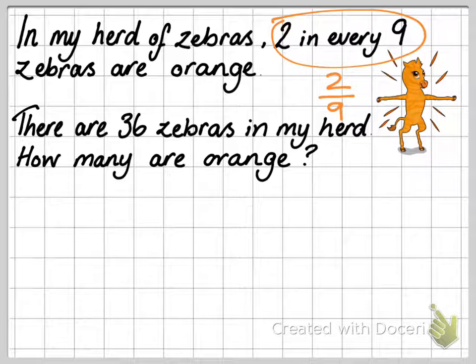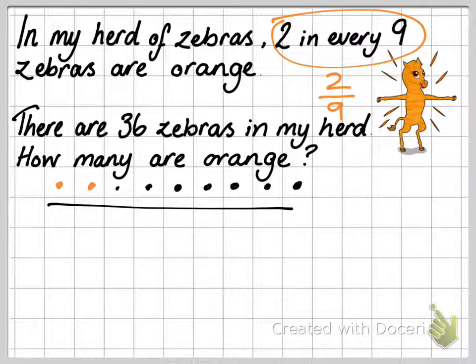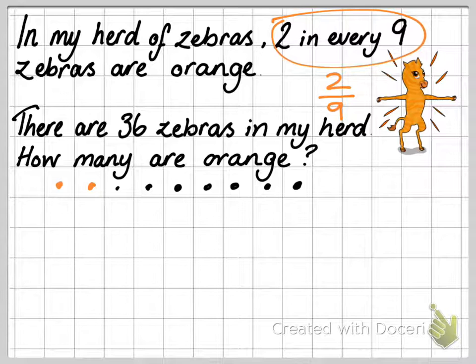So I can take that fraction and draw it like this: 2 in every 9 zebras. I'm going to use black dots because that's normally what color zebras are. 1, 2, 3, 4, 5, 6, 7. So in total, I have 9 zebras and I've colored 2 of them orange.